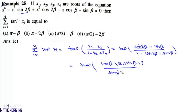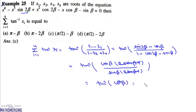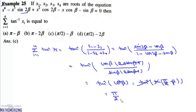Taking sin(β) common from the denominator gives the factor (2sin(β) minus 1), which cancels with the same factor in the numerator. We are left with tan⁻¹(cos β / sin β), and we can write cos(β)/sin(β) as tan(π/2 minus β). Then tan⁻¹ and tan cancel, giving the final answer π/2 minus β, which is option C.